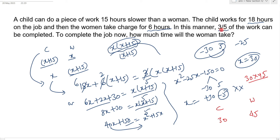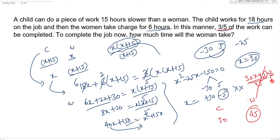Since 3/5 of the work is already completed, 2/5 of the work remains. The woman's efficiency is 45 units per hour, and the remaining work is 2/5 of the total. Dividing: the woman takes 12 hours to complete the remaining work. The answer is 12 hours.